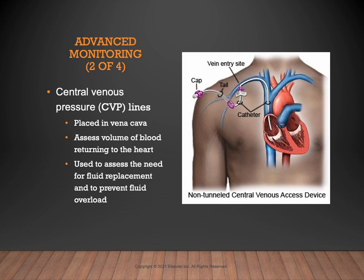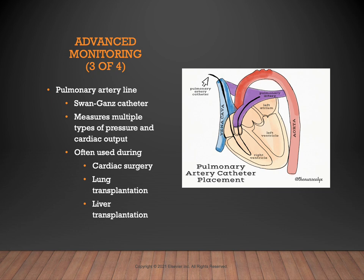Central venous pressure monitoring catheters, or CVP lines, are also sometimes indicated. The CVP line is placed in the superior vena cava to assess the volume of blood returning to the heart, and to assess the need for fluid replacement or prevent fluid overload. The pulmonary artery catheter — such as a SWAN catheter — is guided through the heart into a branch of the pulmonary artery to measure central venous pressure, pulmonary artery pressure, pulmonary capillary wedge pressure, and cardiac output. Patients having cardiac surgery or lung or liver transplantation typically receive a PA catheter.